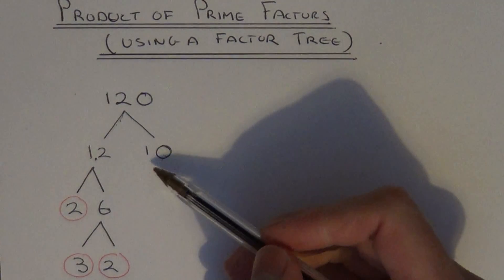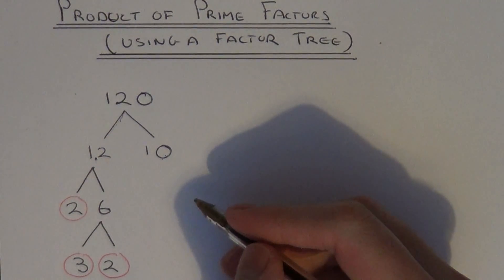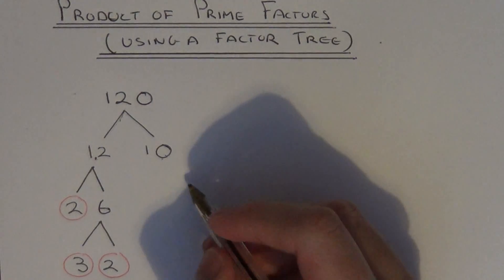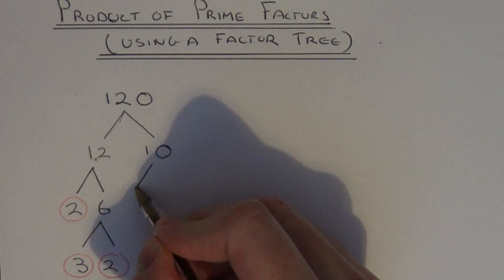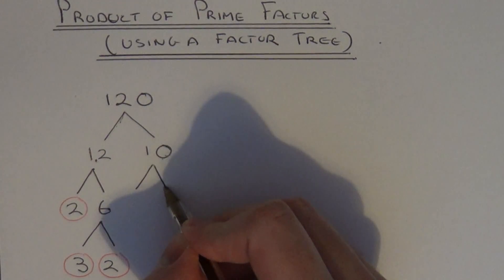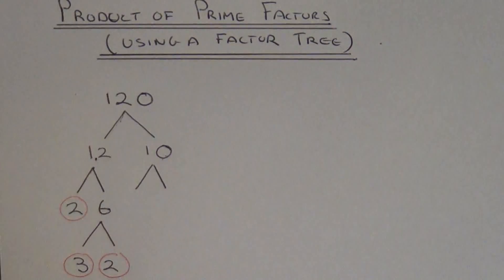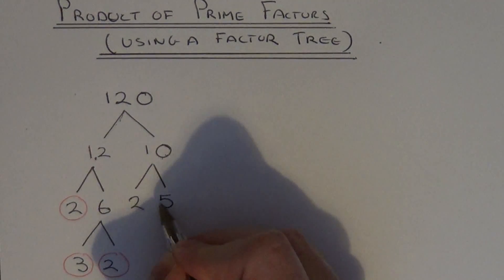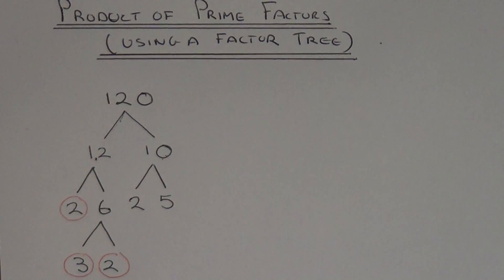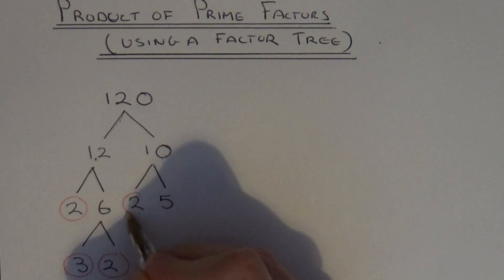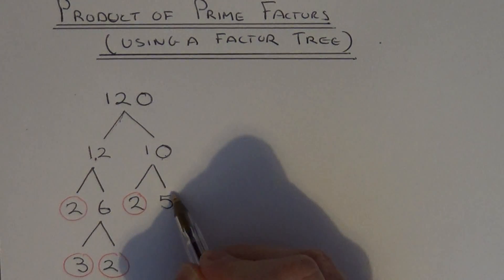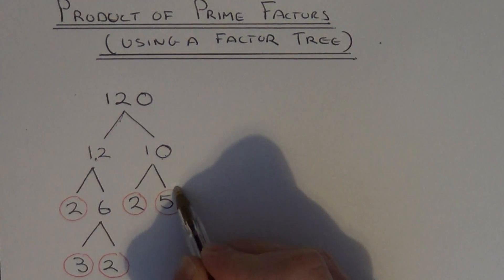Now going back to 10, I need to split this one up into another pair of factors — let's go with 2 times 5. 2 is a prime number so circle it. 5 is a prime number so circle it.